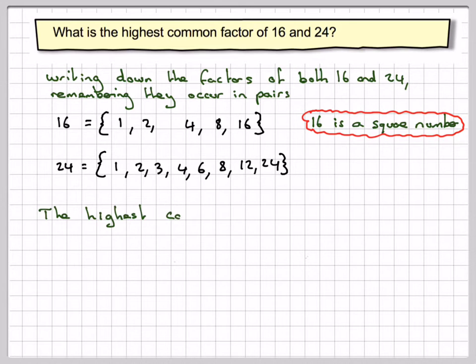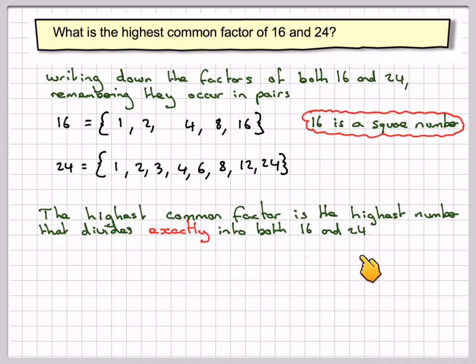Now, the highest common factor is the highest number that divides exactly into both 16 and 24.